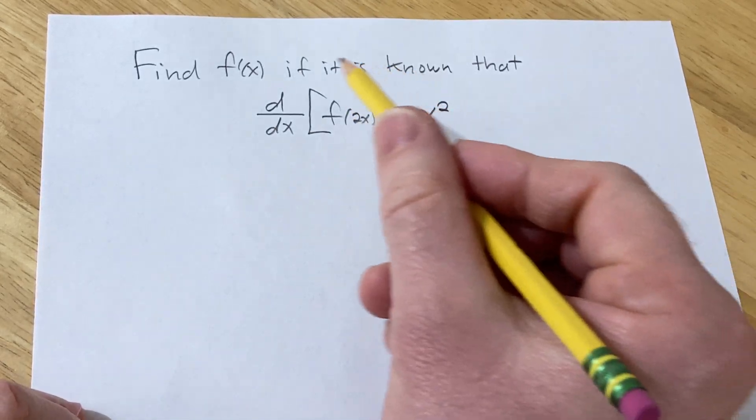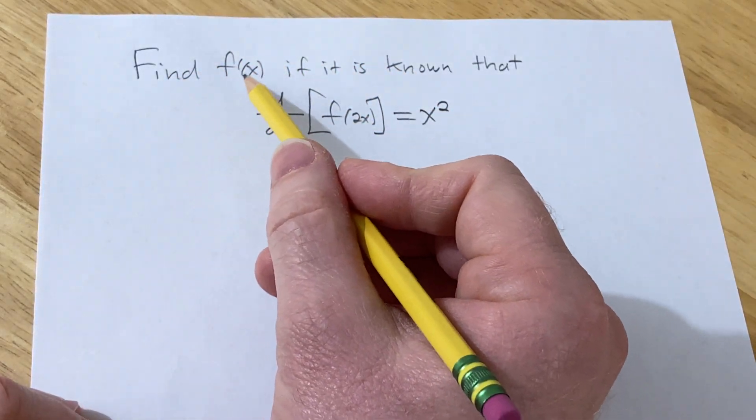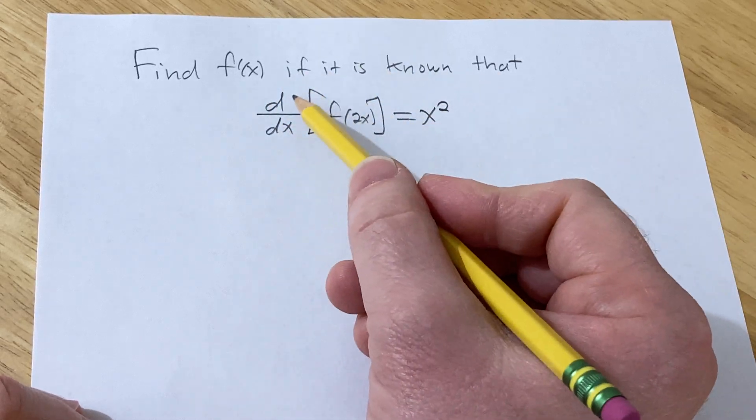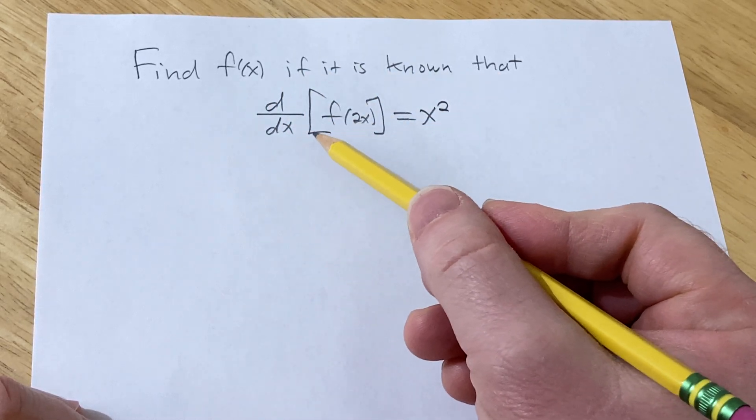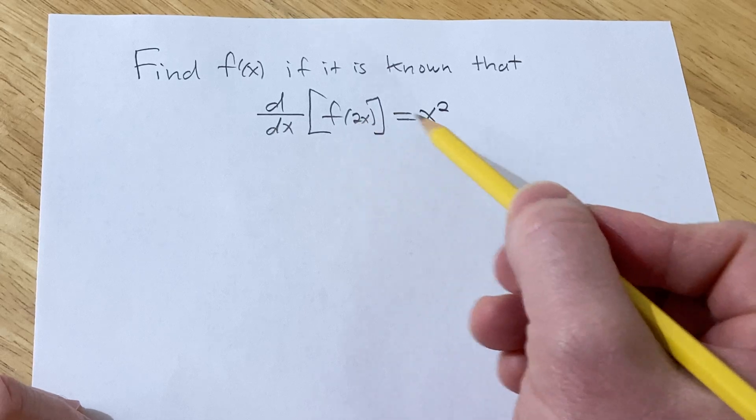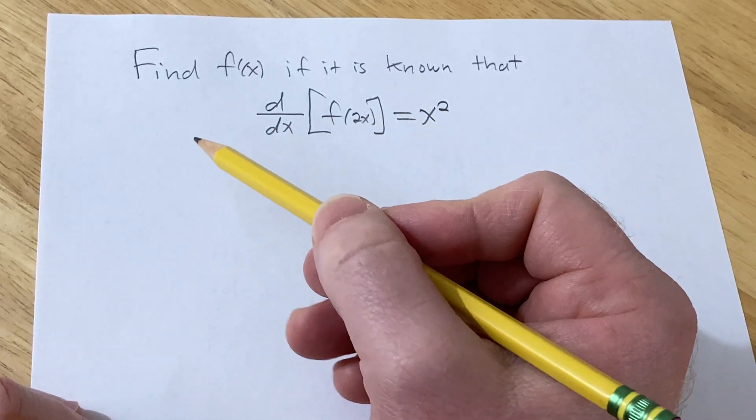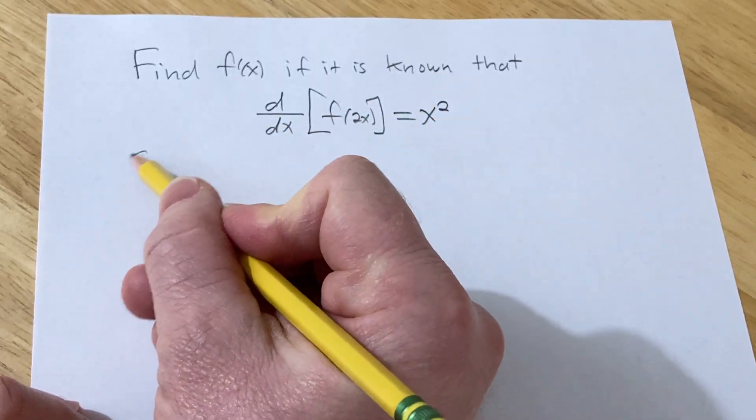In this video we're going to solve this problem. Find f prime of x if it is known that the derivative with respect to x of f of 2x is equal to x squared. Let's go ahead and try to work this out.